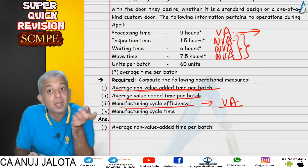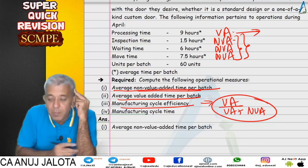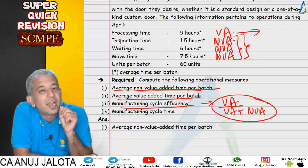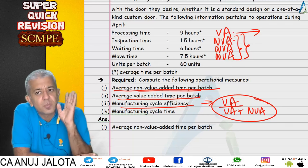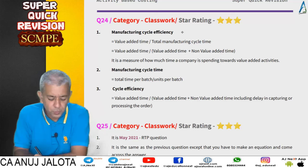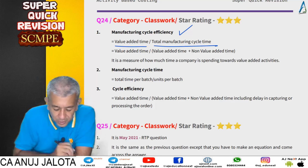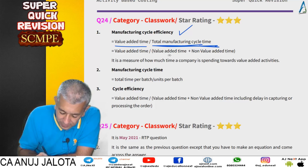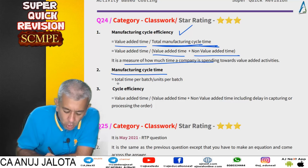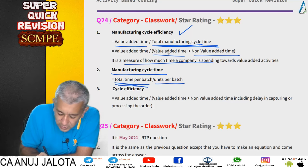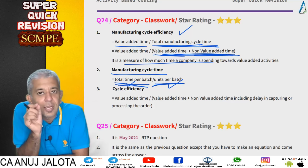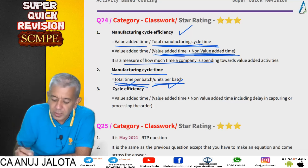Manufacturing cycle efficiency (MCE) is value-added time divided by total time, where total time equals value-added plus non-value-added. This is very important — it shows what percentage of time you devote to value-added activities. Given a choice, this ratio should be as high as possible. Manufacturing cycle time is total time per batch divided by units per batch, giving you the total time required per unit. These are the core formulas for question 24.